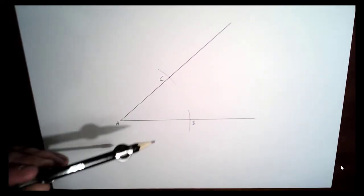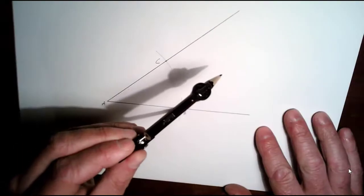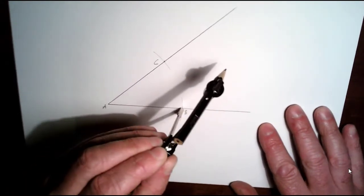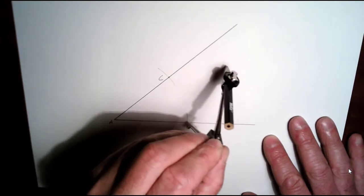So you pick up your compass without moving it in or out. You put your compass at B and draw an arc up here.